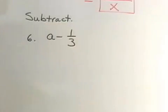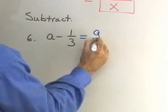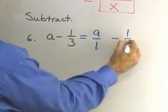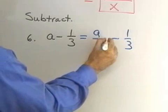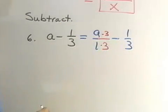Let's try another one. Subtraction problem. I have a minus 1/3. I'm going to write that as a over 1 minus 1/3. I can see that the least common denominator is 3.